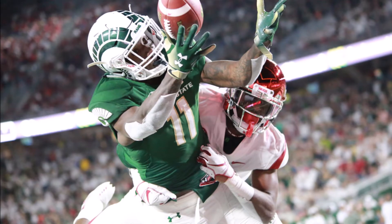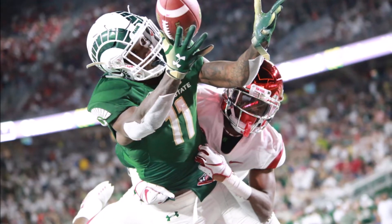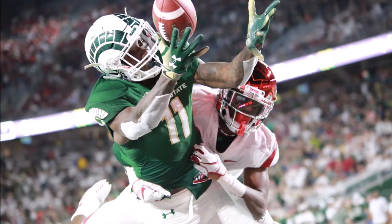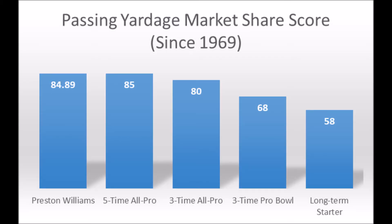If you're new to the channel, all terms and definitions will be in the description. Getting to Preston Williams' production data — it was pretty decent. Williams had an 84.89 market share production score. He pretty much hits the three-time All-Pro, three-time Pro Bowl, and long-term starter threshold. Even though he didn't hit the five-time All-Pro threshold of 85, he's only 0.09 away from hitting that. So it's great production overall — there's no issue with his production.